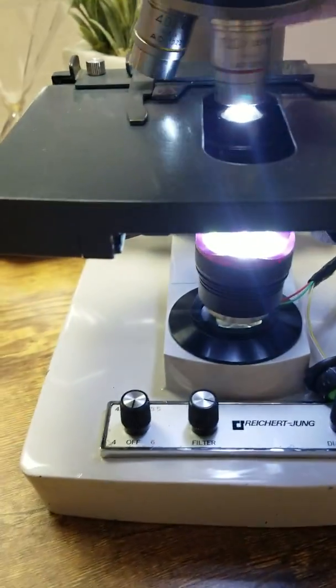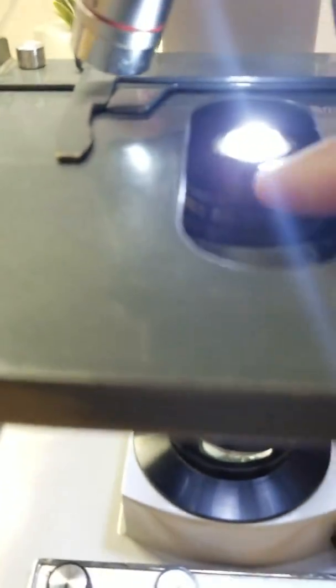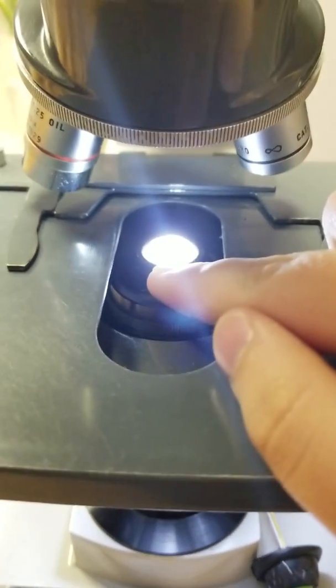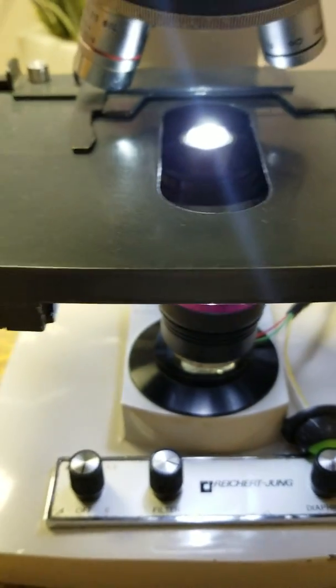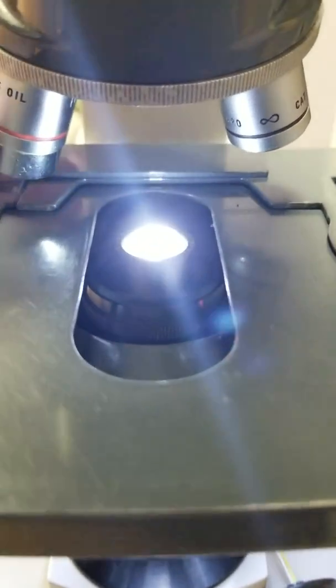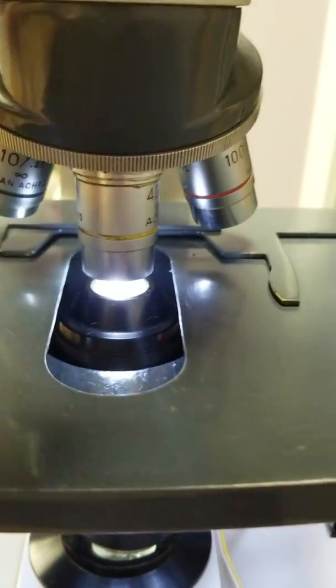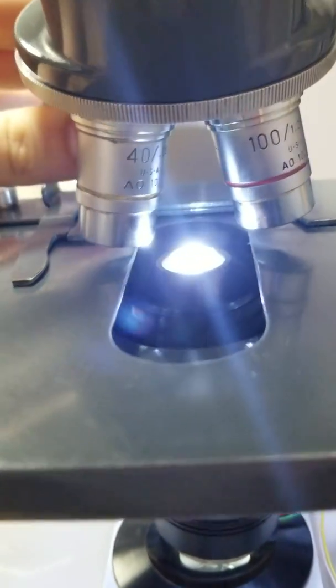So then, since my 40-time objective isn't oil, I just put oil on the condenser. And then that helps to shoot all of the light right into the sample and have it help it reflect. And then I just turn my oil on, or not my oil, I turn my 40 on.